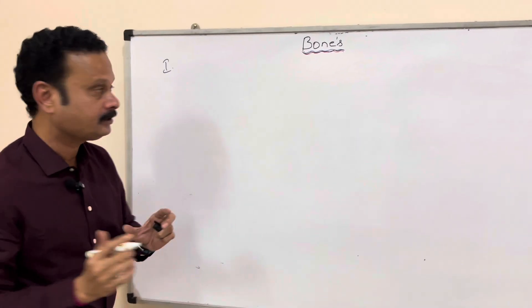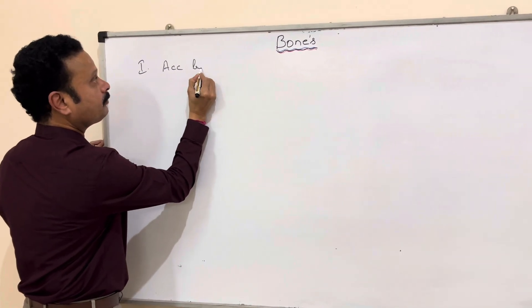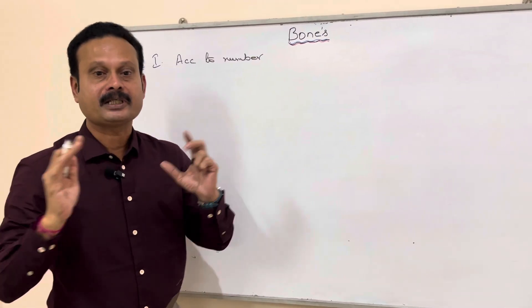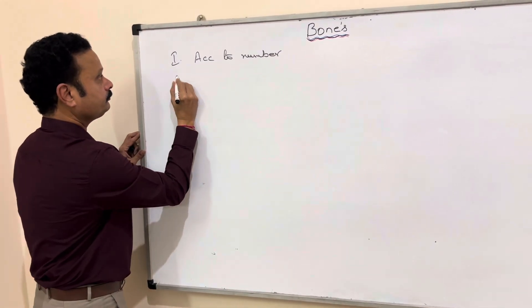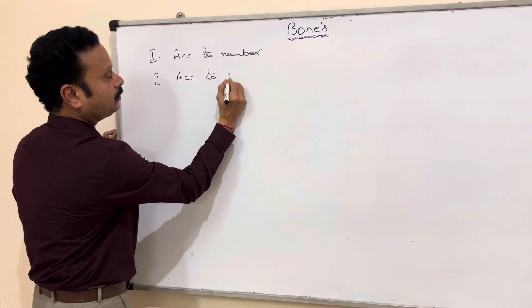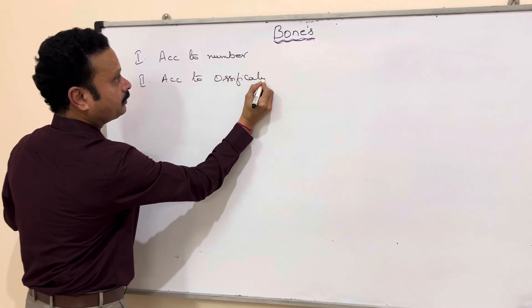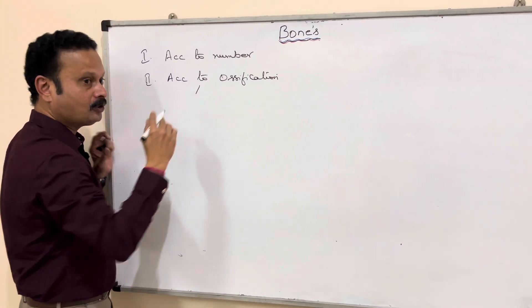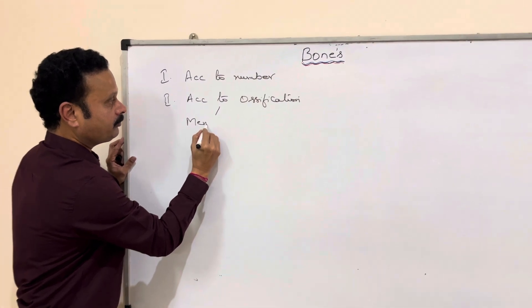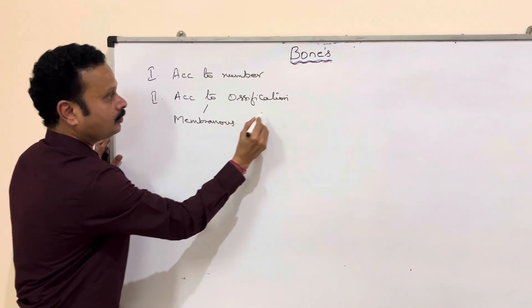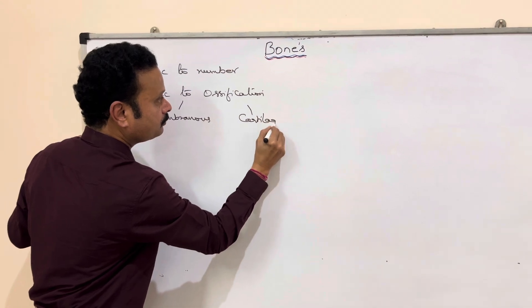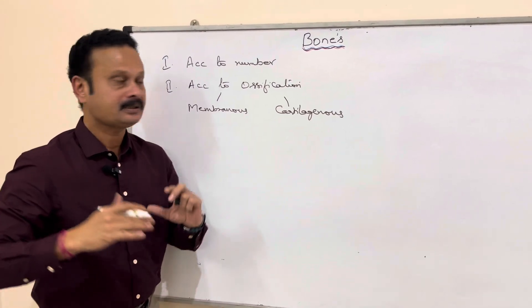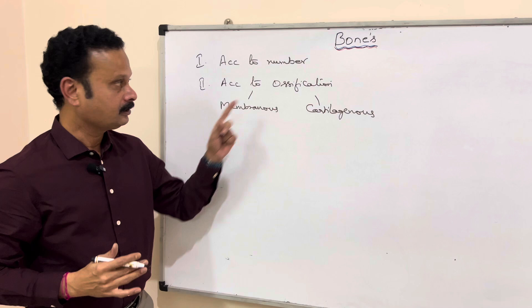The first classification is according to number. The second is according to ossification, that means how the bone is ossified. Under this, the bone can be classified as either membranous bone, cartilaginous bone, or membranocartilaginous bone. These three varieties are noted according to this classification.